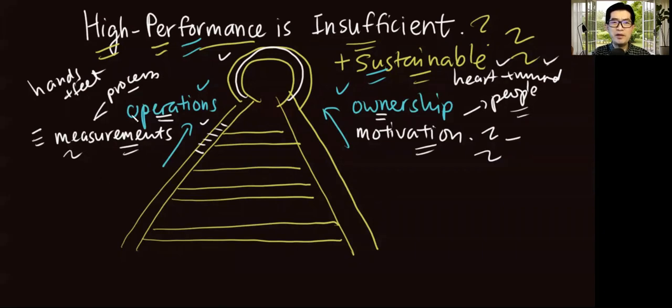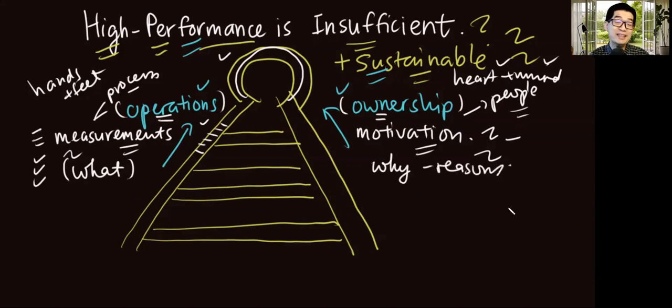Secondly, high performance from an operational standpoint has to do with what needs to be done. There is a checklist on what needs to be accomplished. However, in the ownership track, we talk about why this should be accomplished. We talk about the reasons why certain things need to be done.